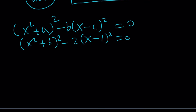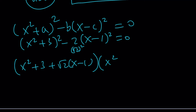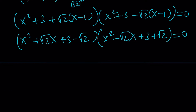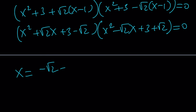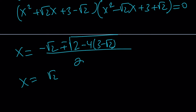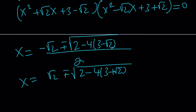This is a difference of two squares, so we can factor it as x squared plus 3 plus square root of 2 times x minus 1, multiplied by x squared plus 3 minus square root of 2 times x minus 1 equals 0. This gives us x squared plus root 2 times x plus 3 minus root 2, and x squared minus root 2 times x plus 3 plus root 2. From here you can use the quadratic formula — negative b plus or minus square root of b squared minus 4ac — for each factor, giving the four solutions of the quartic.